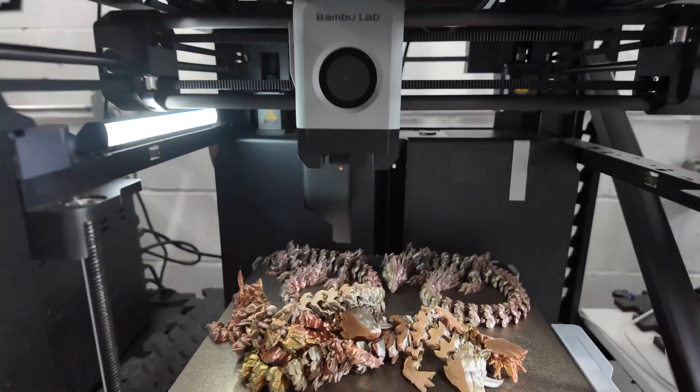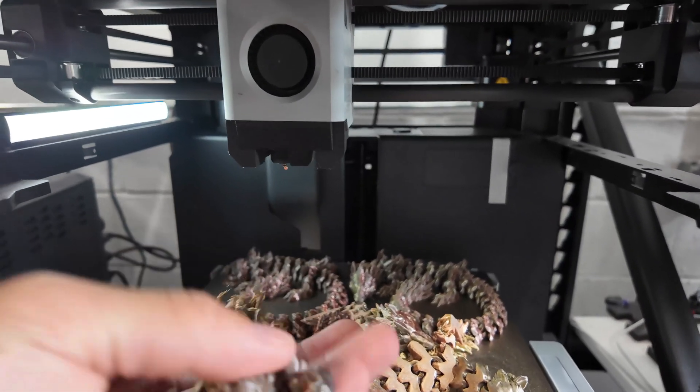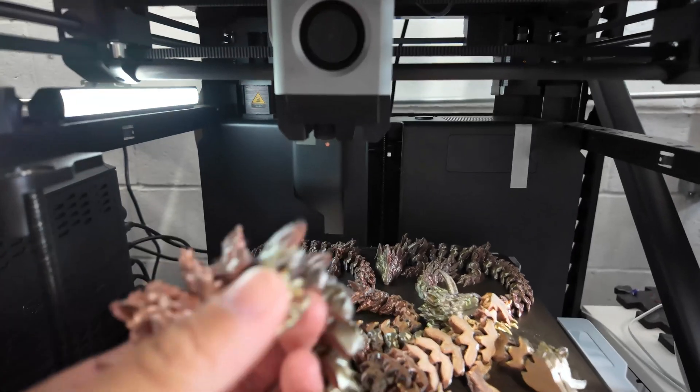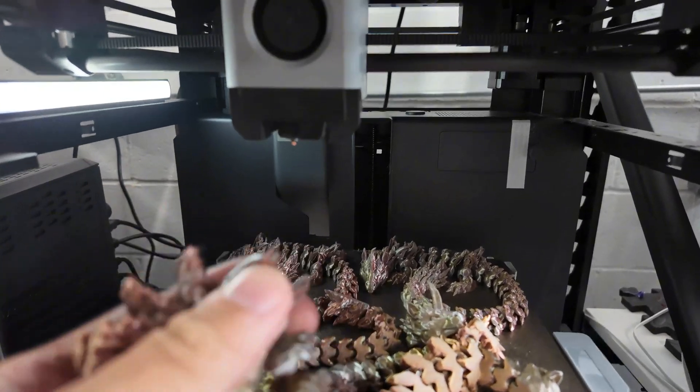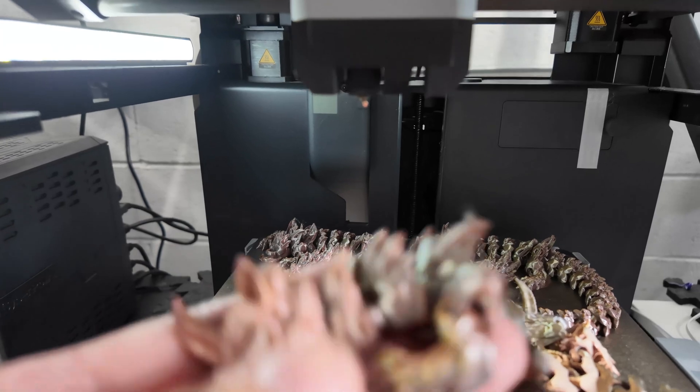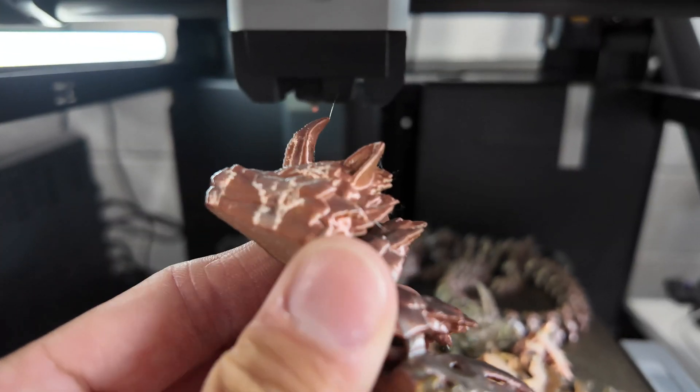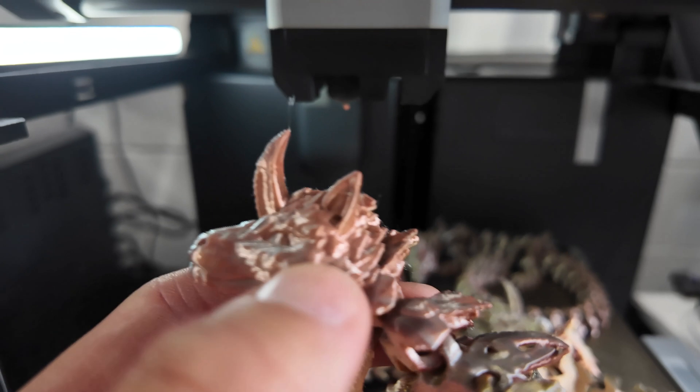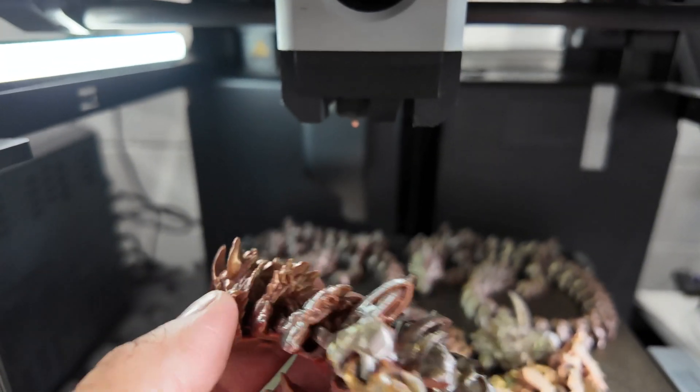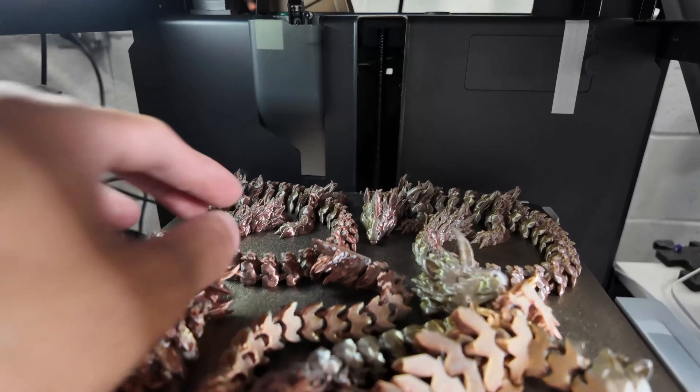All right guys, let me show you this printer here. This is our second failed print. If you look at it, you'll see there are layer line skips on the head and all throughout the body of the dragon.